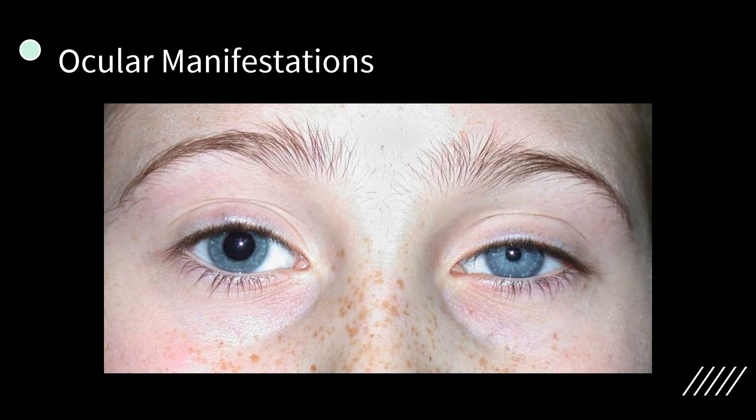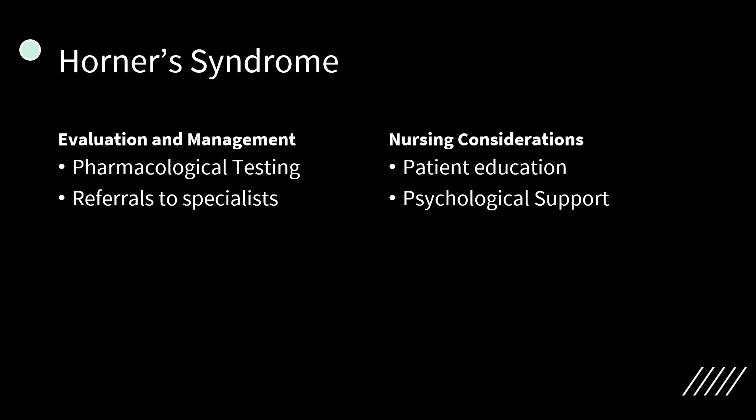Ocular manifestations of Horner's syndrome include mild ptosis, a miotic pupil causing anisocoria, and heterochromia in genetic cases. Evaluation includes positive pharmacological pupil testing using cocaine to confirm diagnosis, hydroxyamphetamine to differentiate preganglionic from postganglionic lesions, and adrenaline to assess denervation supersensitivity. Nursing considerations involve patient education for understanding the disease process and providing psychological support.